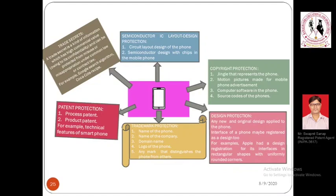If Apple disclosed the coding of Mac OS to anyone aware of such coding, they would easily try to build their own operating system based on the same code. That is why it is not disclosed easily to anybody, and thus it is characterized as a trade secret.